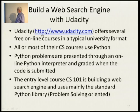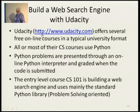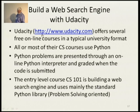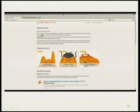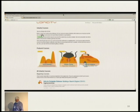Recently I became familiar with something called Udacity. It's an online university that offers several free online courses in a typical university format. All or most of their computer science courses use Python. Python problems are presented through an online Python interpreter and graded when the code is submitted. The entry-level CS101 is 'building a web search engine' and uses mainly the standard Python library. It's very problem-solving oriented. This video clip shows some different Python courses and how the interactive Python editor works — you can get graded right away.